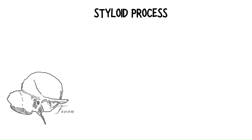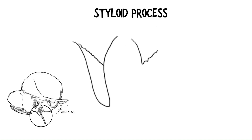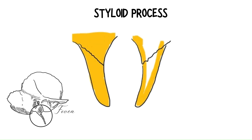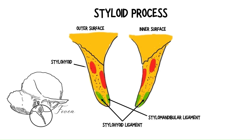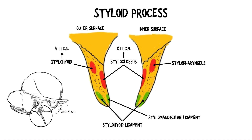The styloid process is a cylindrical projection of varying lengths, averaging two to three centimeters. It projects from the inferior part of the petrous temporal bone and offers attachment to the stylohyoid ligament, the stylomandibular ligament, and the stylohyoid, stylopharyngeus, and styloglossus muscles. The styloid process facilitates the movement of the tongue, pharynx, larynx, hyoid bone, and mandible. The styloglossus receives innervation from the hypoglossal nerve; innervation of the stylohyoid is by the facial nerve; and the stylopharyngeus muscle is supplied by the glossopharyngeal nerve.